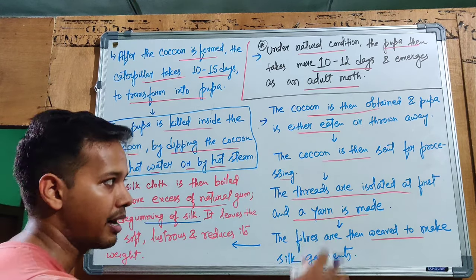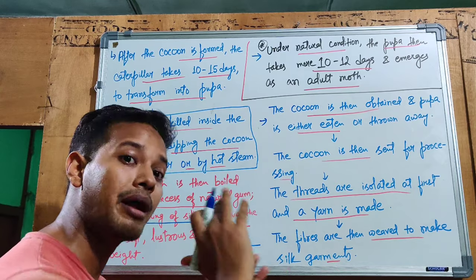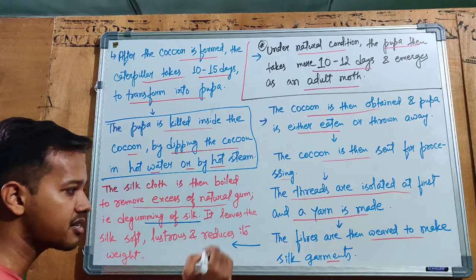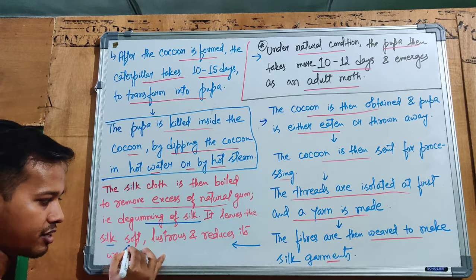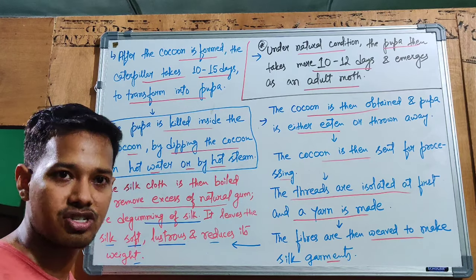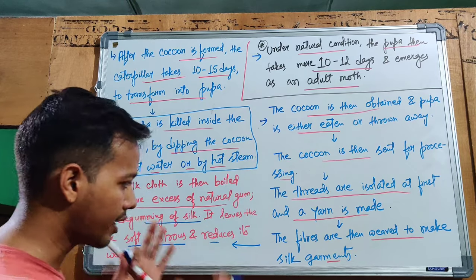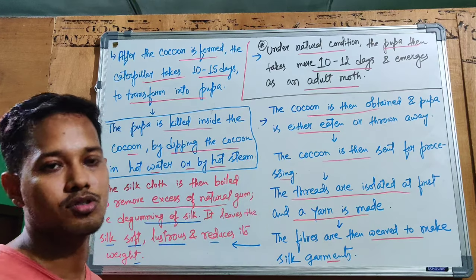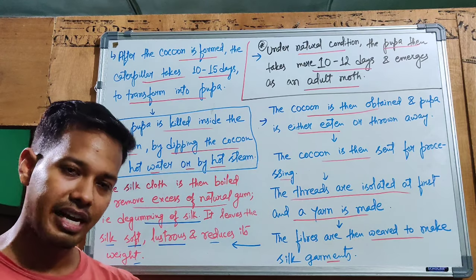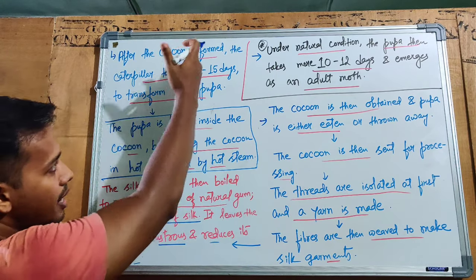Degumming leaves the silk garment soft, lustrous, and shiny, and reduces its weight. If the gum is not removed, the garment will be heavy. Excess sericin is removed so the final product is lighter, softer, and has a better texture and shine. This is why degumming is an important industrial step.